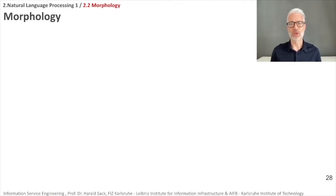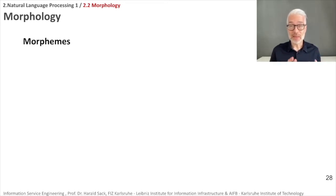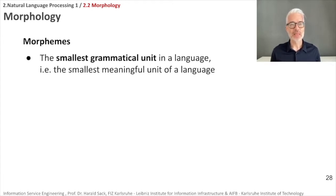Morphology also covers the relationship of words to other words in the same language. The basic building block in a language is words, but sometimes words are complex and constructed. There is a more basic element to consider: the so-called morphemes. Morphemes are the smallest grammatical units in a language — the smallest meaningful unit.